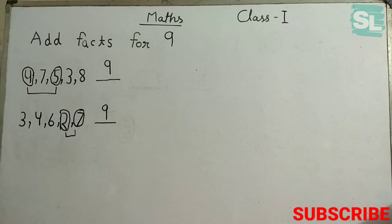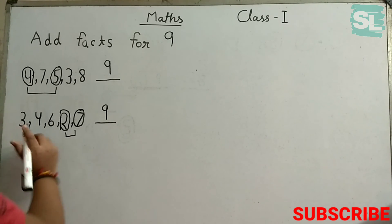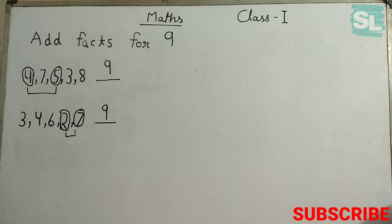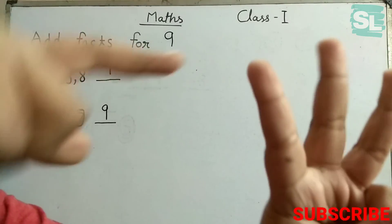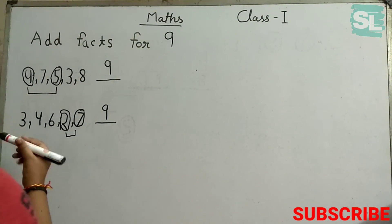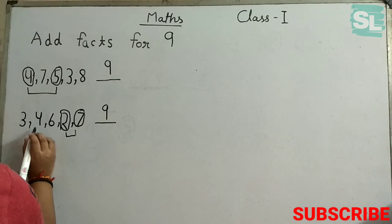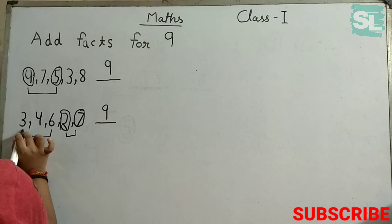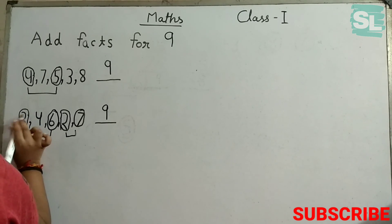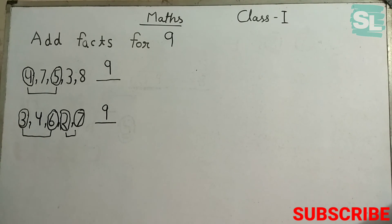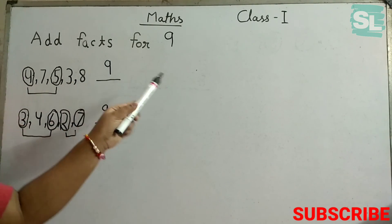I think we will get 1 more 9. How? 6 plus 3. Like we have 6, and we found 3 more: 6, 7, 8, 9. So we found one more way to make 9 — by 6 plus 3. So friends, we have learned addition facts for 8 and 9.